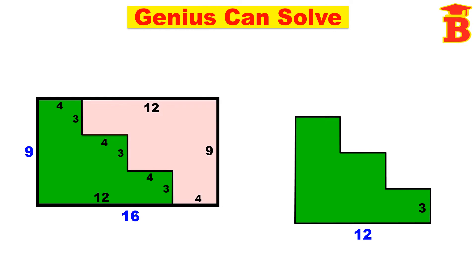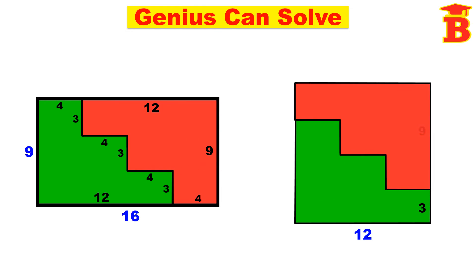Now similarly, we have the other piece. Take and place the other piece on the first piece like this. And note that this side is 9, so we have the same 9 here. Then only the total will be 9 plus 3, that is 12.